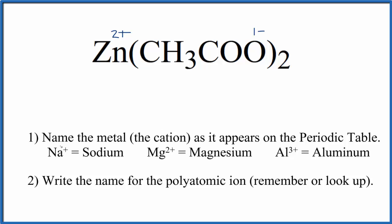So when we write the name, first we're going to write the name of the metal as it appears on the periodic table. Zn, that's just zinc. Then we write the name for the polyatomic ion, the acetate ion. So you either know that this is the acetate ion and it's 1-, or if you're allowed, you look it up on a table of polyatomic ions.